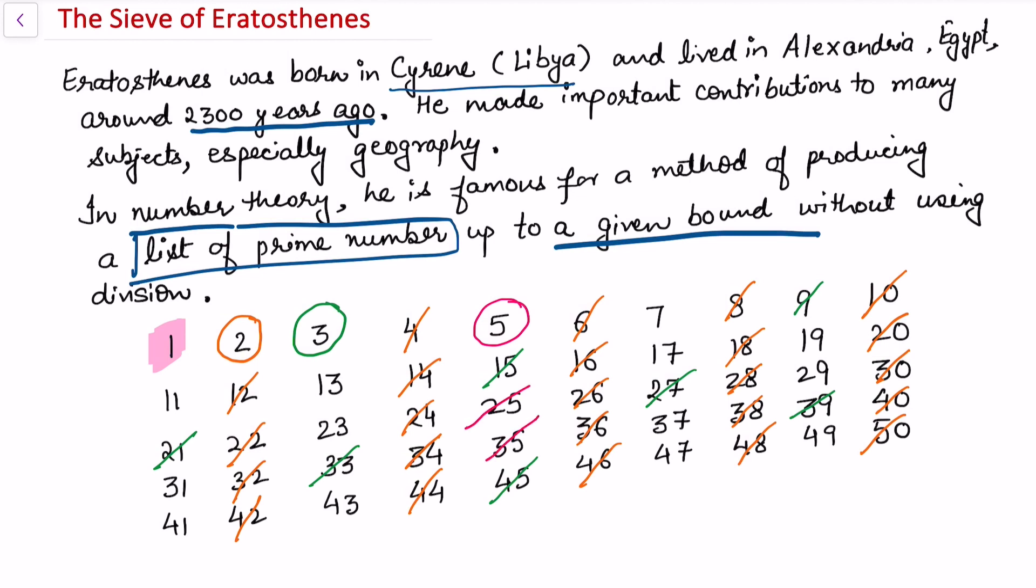Next number that we select is 7. Circle the 7 because 7 has not been crossed off. Now cross off all the multiples of 7. When we cross all the multiples of 7, we see 49 is crossed off. And now we stop the process at 7 only to see the primes which are less than or equal to 50.